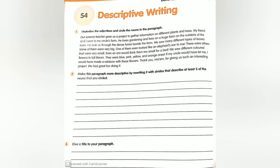We saw many different types of leaves. Circle: types and leaves; underline: different. Some of them were very big. Underline: big. One of them even looked like an elephant's ear. Circle: elephant's ear. There were others that were very small. Underline: small. Even an ant would think them too small for a bed. Circle: ant, bed.